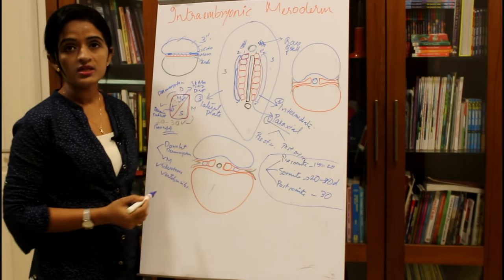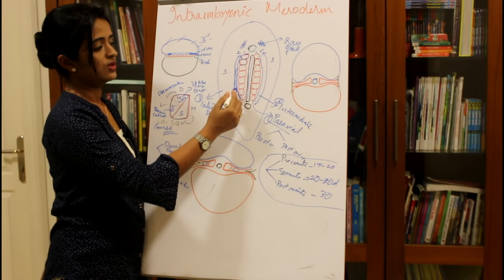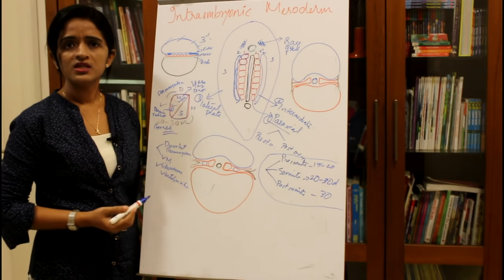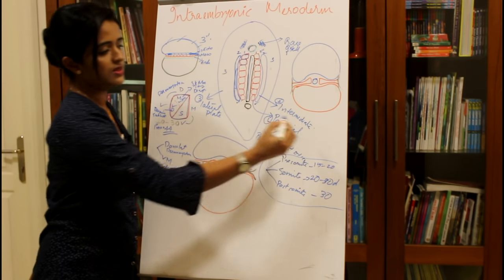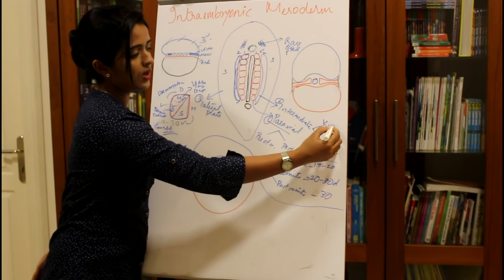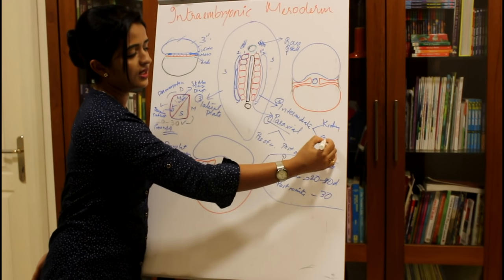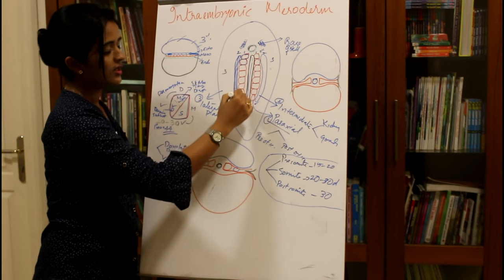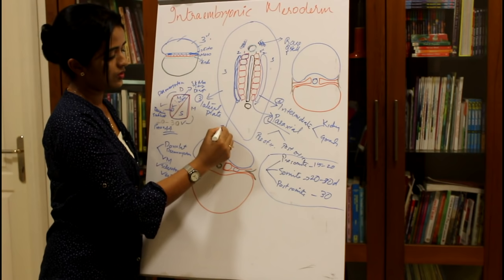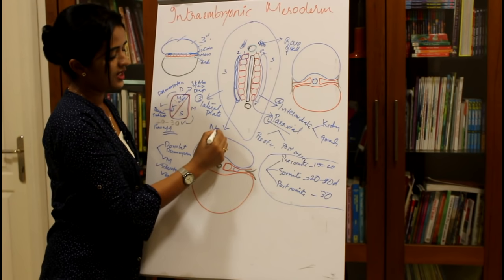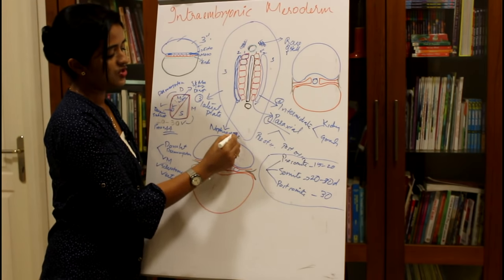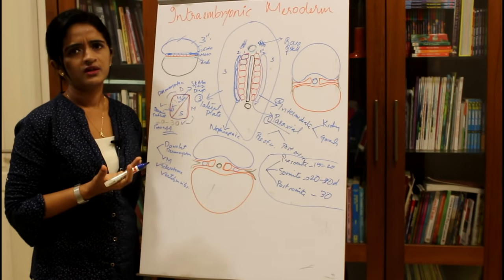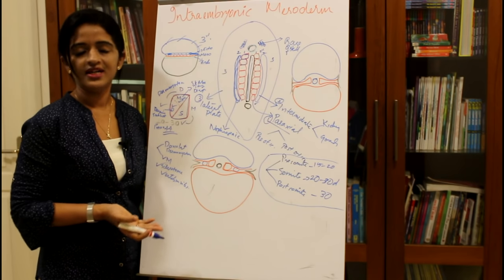The intermediate mesoderm connects the paraxial with the lateral plate mesoderm. It forms a cord from the cephalic to the caudal end called the nephrogenic cord, which gives rise to the kidney and the gonads. The detailed development of the kidney and gonads will be covered in the next session.